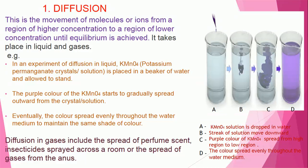In an experiment of diffusion in liquid, potassium permanganate crystal or solution is placed in a beaker of water and allowed to stand. It was observed that the purple color of the potassium permanganate starts to gradually spread out from the crystal solution spot. Eventually, the color spread evenly throughout the water medium to maintain the same shade of color.